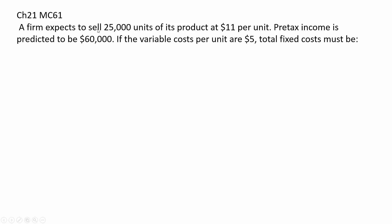A firm expects to sell 25,000 units of its product at $11 per unit. Pre-tax income is predicted to be $60,000. If the variable cost per unit is $5, total fixed cost must be what?